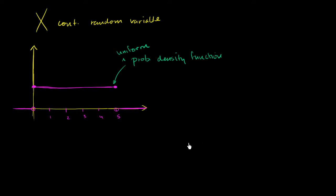The first question is: what is the height, or what is this level? We see it's uniform, but uniform at what level? What value does this horizontal line intersect on the vertical axis? To think about it, we have to realize that whether we're talking about a continuous or discrete random variable, the probability of getting any one of the possible outcomes — the sum of all of those — has to equal 1. You have a 100% chance of getting one of the possible outcomes.